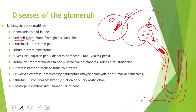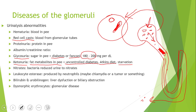Another thing you can get in your urine is glycosuria — sugar in the urine — which is common in people with diabetes or Fanconi syndrome. You're looking for between 180 to 200 milligrams per deciliter. Next is ketonuria — fat metabolites in your urine — which you'll see in people on the Atkins diet, people who are starving, or those with uncontrolled diabetes, as the body breaks down ketones.